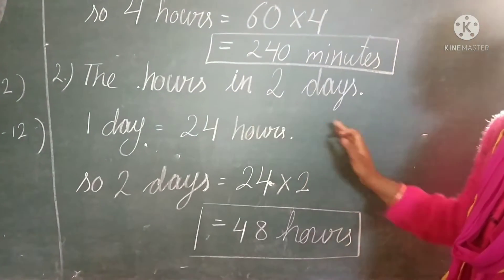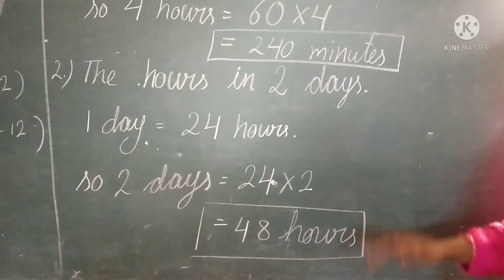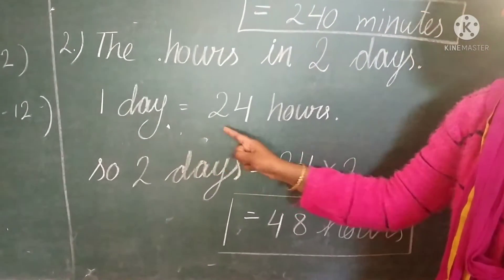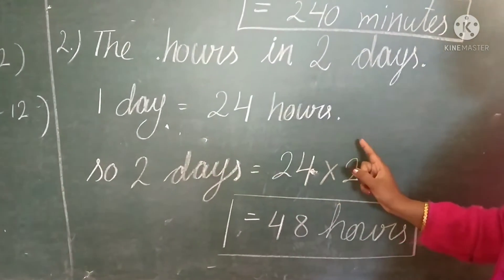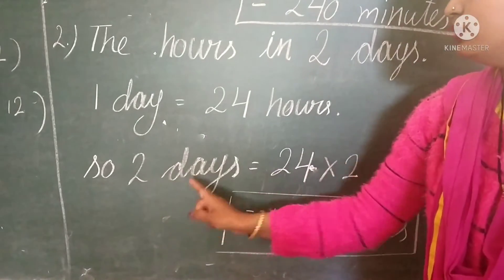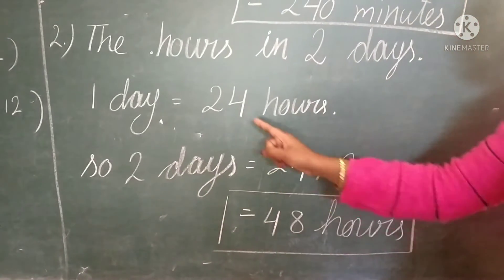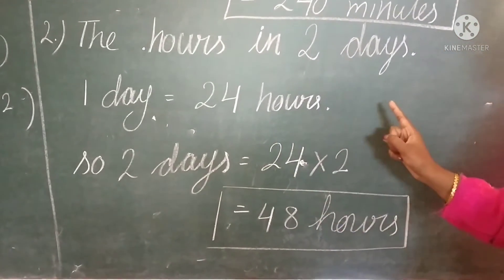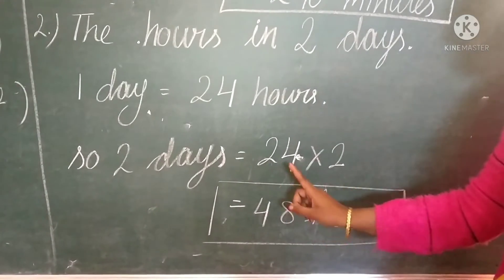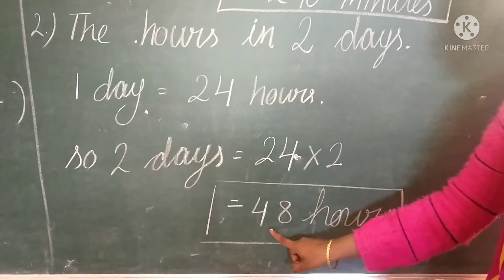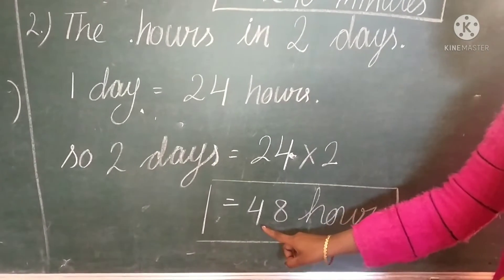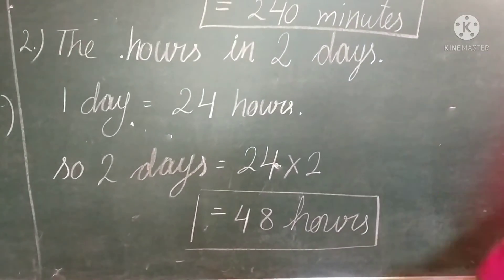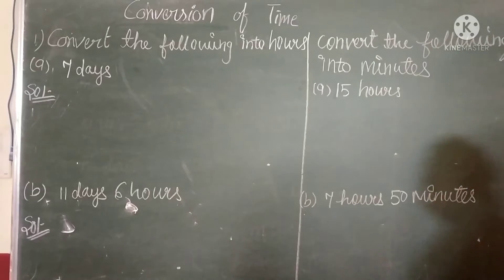Next question: the hours in 2 days. We know that 1 day equals to 24 hours. So, 2 days equals to 24 multiplied by 2. We get 48. So, 48 hours in 2 days.